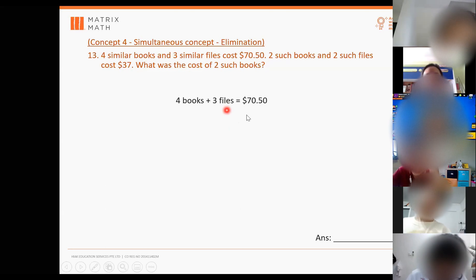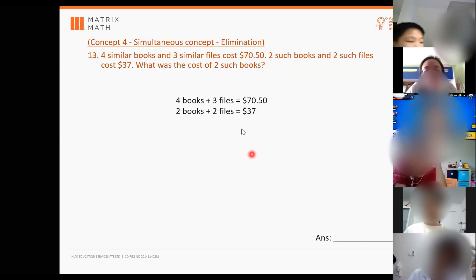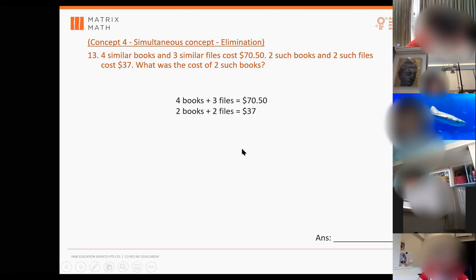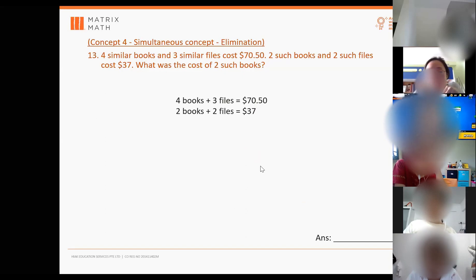Okay, just write four B plus three F equals $70.50. So Pyro, what's the next equation you can write? The next equation that we can write is that two books and two files cost $37. Very good. So you have these two equations. So anyone remember what can we do from here? If you recall from last year. You must try to get rid of one object. Correct. You must try to get rid of one object.